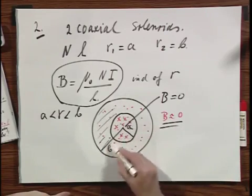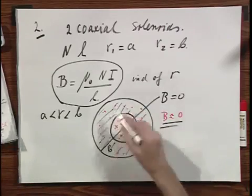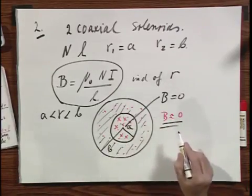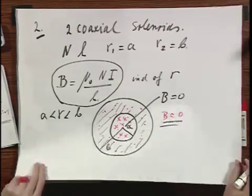So the B is only non-zero in this hashed area. So it's very interesting. You have a donut type of magnetic field.